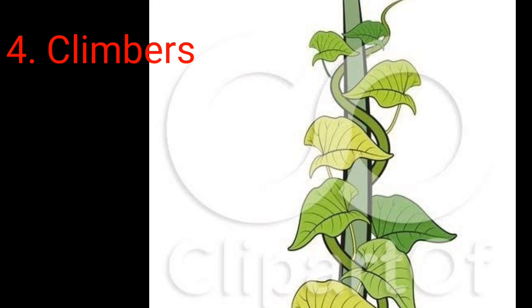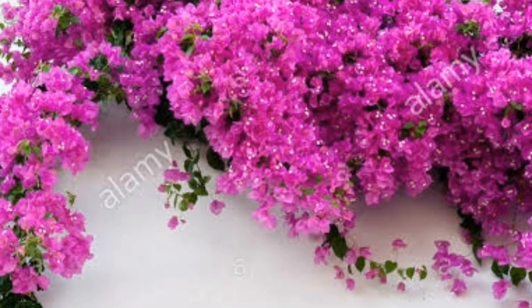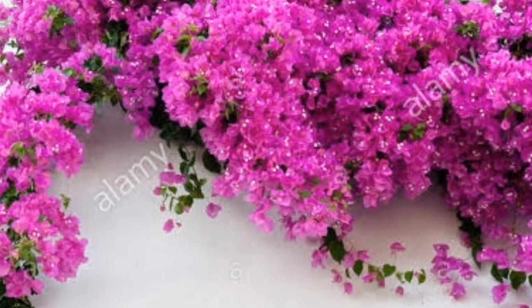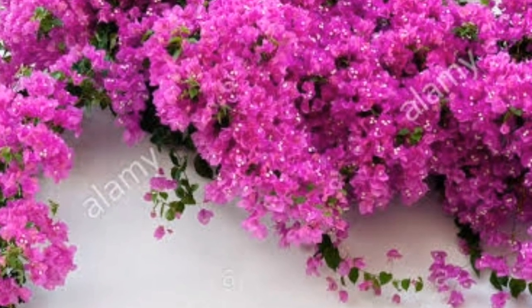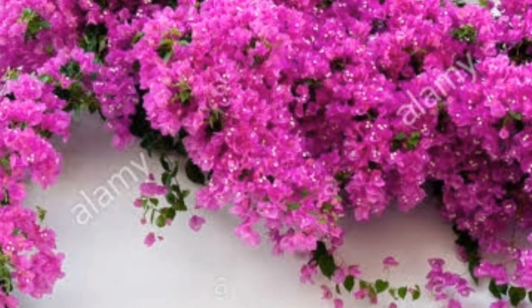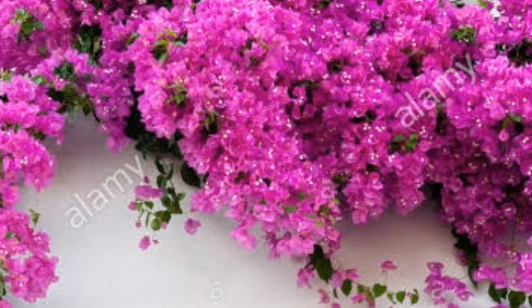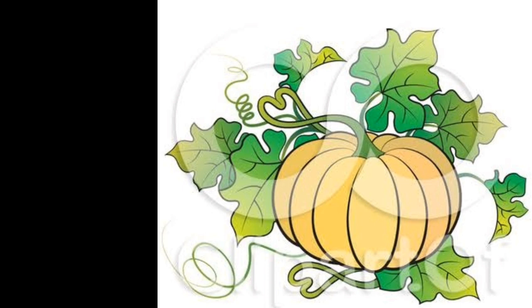Number four: Climbers. Some plants are too weak to grow straight. For example, money plant, grape plant, and bougainvillea. They need some kind of support such as trees, sticks, or buildings. These plants are called climbers. Number five: Creepers. Creepers are weak plants that grow along the ground — for example, pumpkin and watermelon.